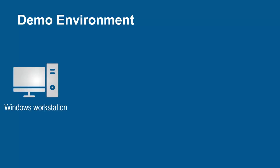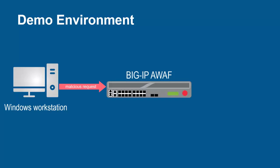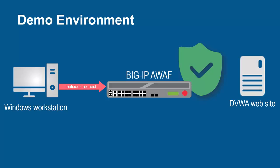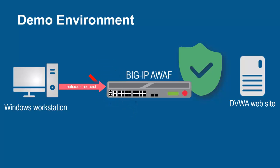The environment for this demo contains three devices. A Windows workstation will be used to make malicious requests using user input fields. These requests will arrive at the F5 BIG-IP system running Advanced WAF. The BIG-IP system sits in front of and protects the backend web application. Using its full proxy architecture, it examines every request and can block all malicious requests, preventing them from reaching the backend web servers.